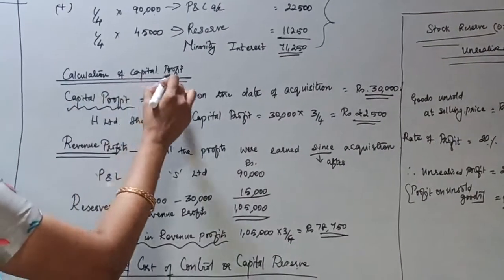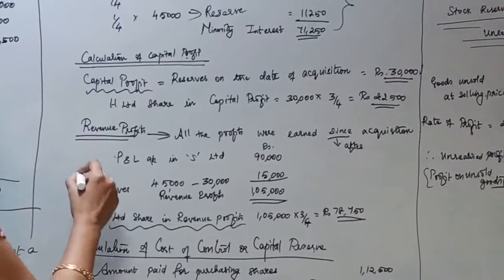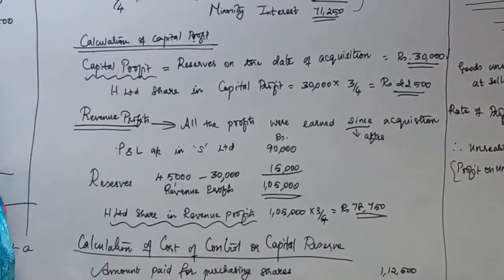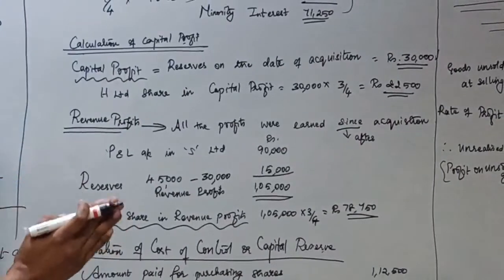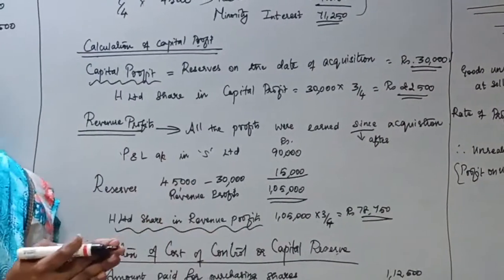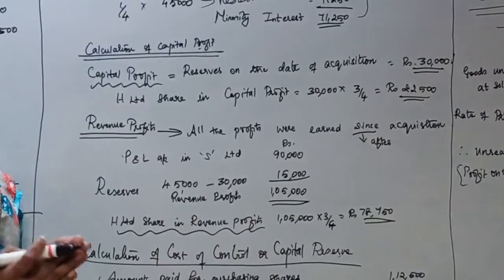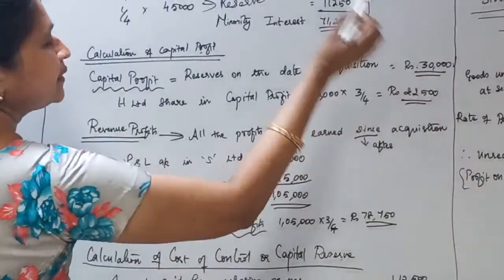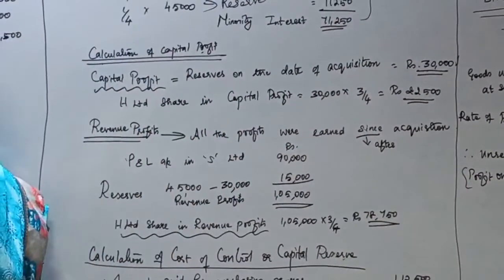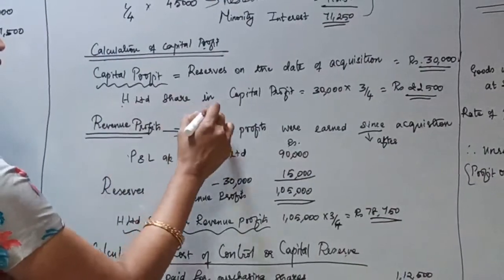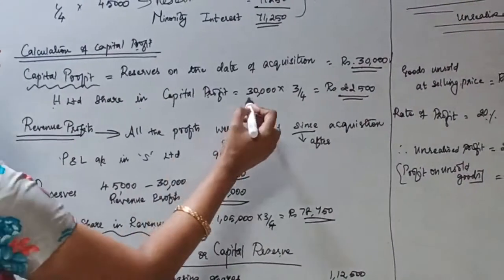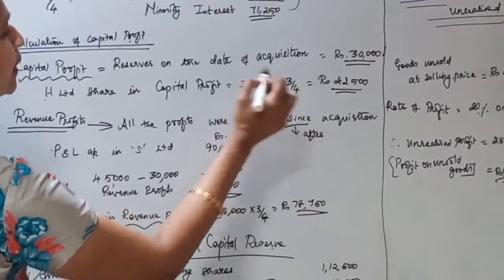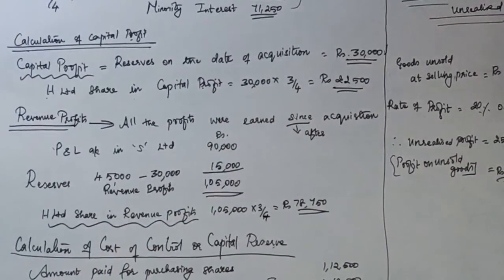Next, calculate capital profits. In this problem, capital profit is equal to the reserves on the date of acquisition. Only reserves on the date of acquisition are given in the additional information, so take Rs.30,000 as capital profit. H Limited's share in capital profit is 30,000 × 3/4 = Rs.22,500.